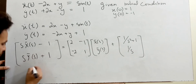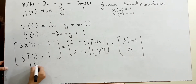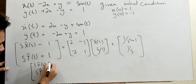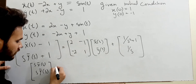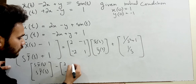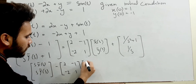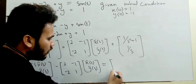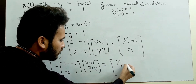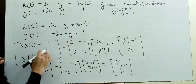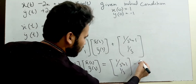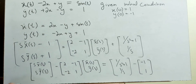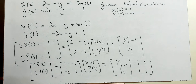Further simplification gives us: s·X̄(s) and s·Ȳ(s) minus [2, -1; -2, 1] times [X̄(s); Ȳ(s)] equals [1/(s²+1); 1/s] plus [-1; 1], where the sign of the coefficient matrix terms changes to give -1 and +1.